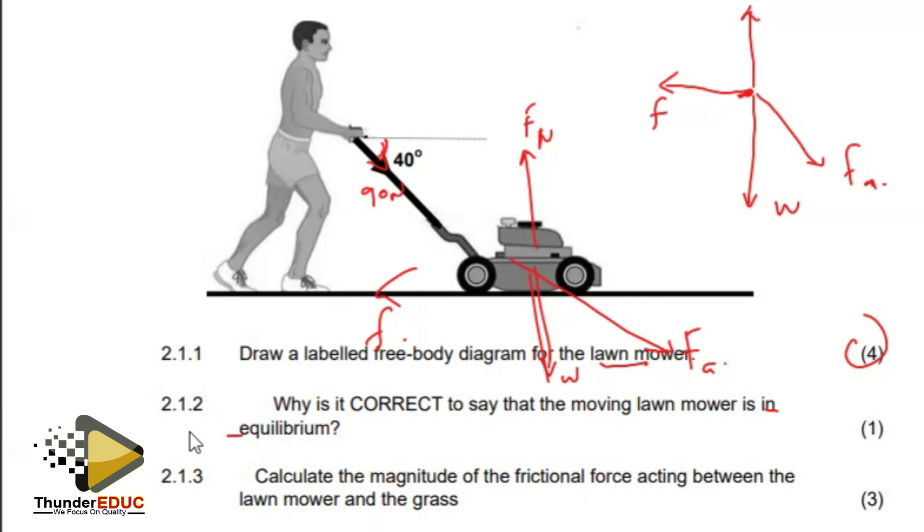For as long as the constant speed, the net force is zero. The left hand side equals the right hand side, where the force being applied, which is just a component, should equal the frictional force. It's moving at a constant speed.